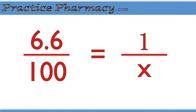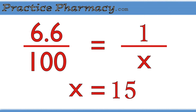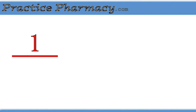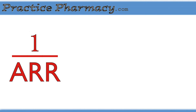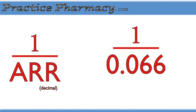You can solve for x, and notice that this is exactly how you calculate the number needed to treat — but the formula looks a little different because it's just 1 divided by the absolute risk reduction, where the absolute risk reduction is expressed as a decimal. So in this case it's 1 divided by 0.066, which equals 15.